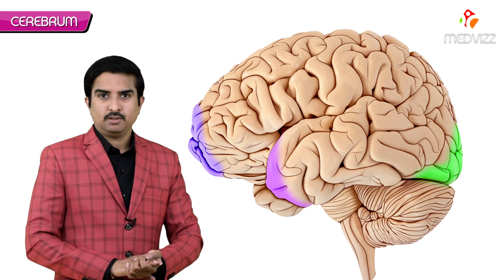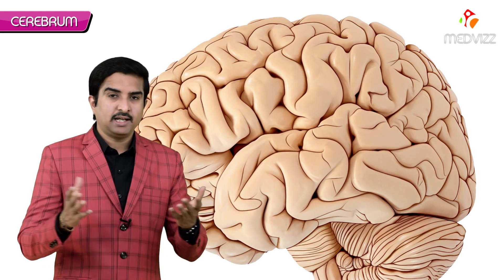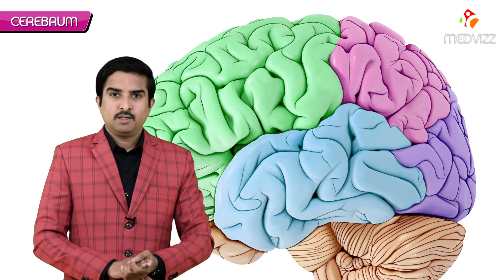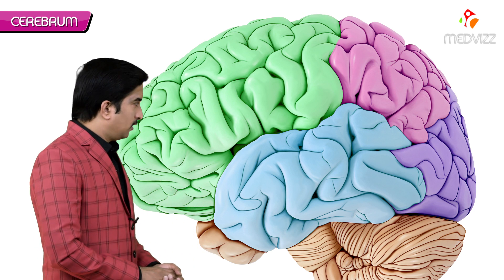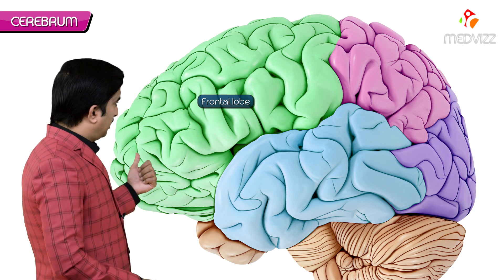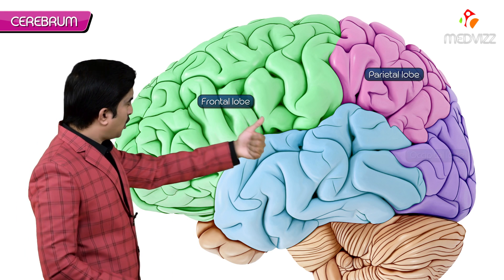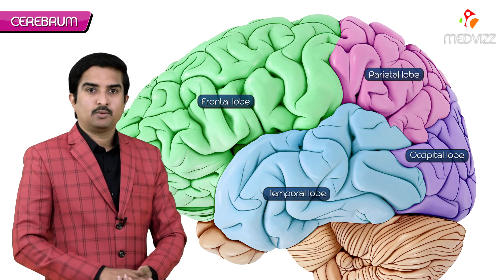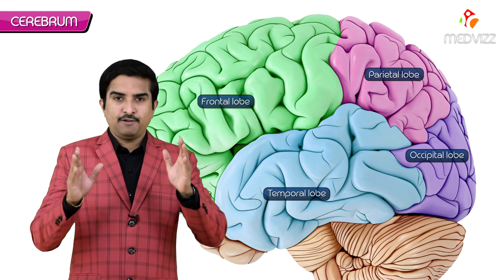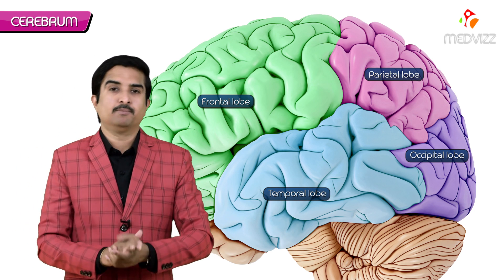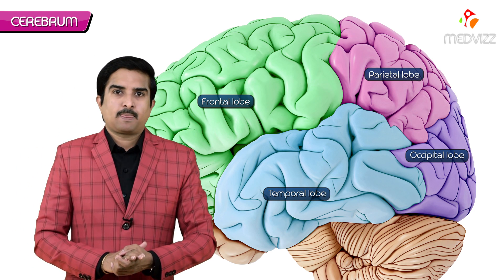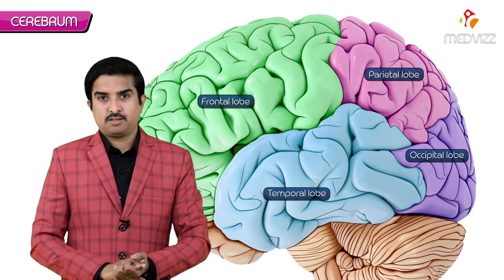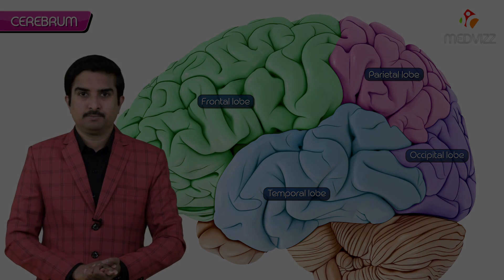There are totally four lobes in the cerebrum: frontal, parietal, occipital, and temporal. This is the classical presentation about the cerebrum.